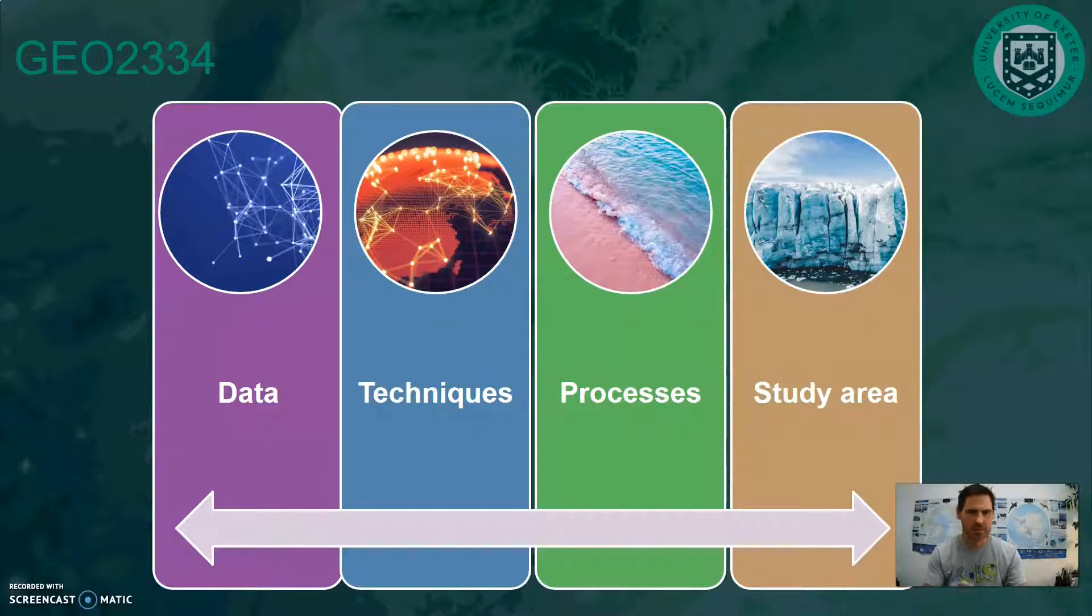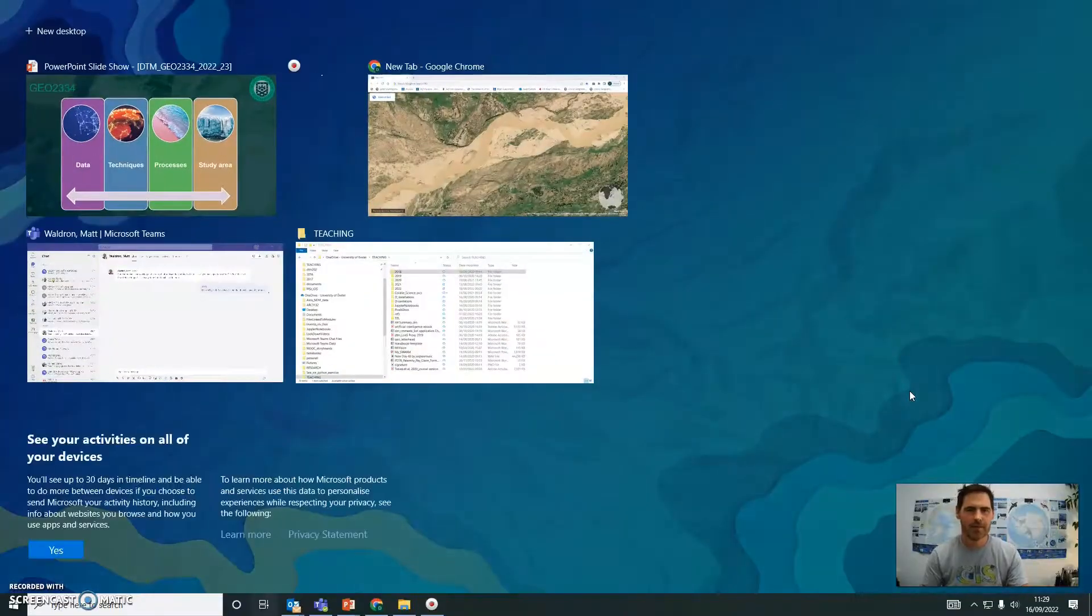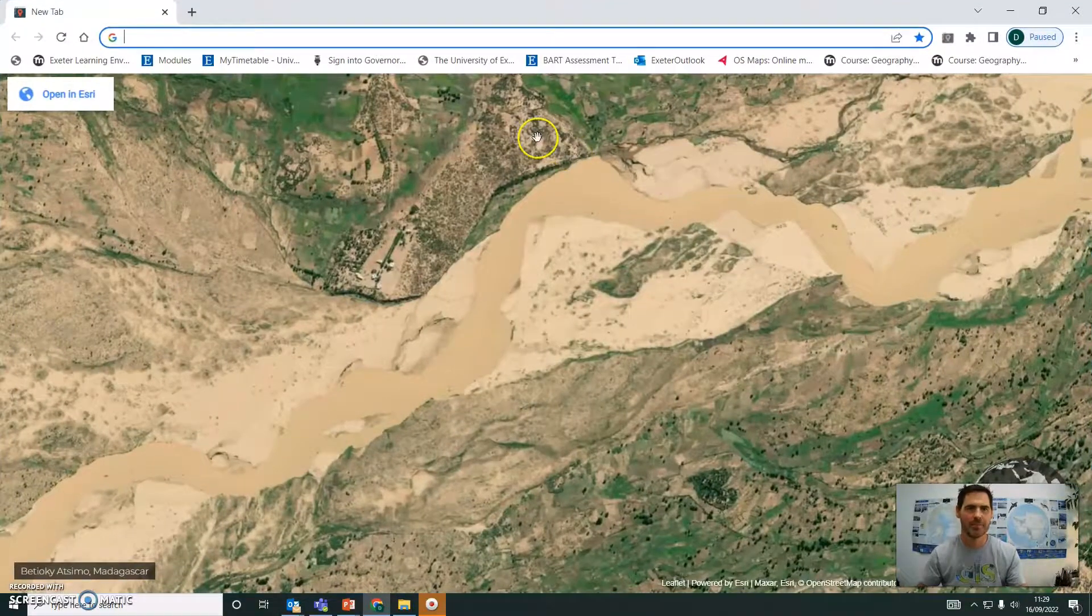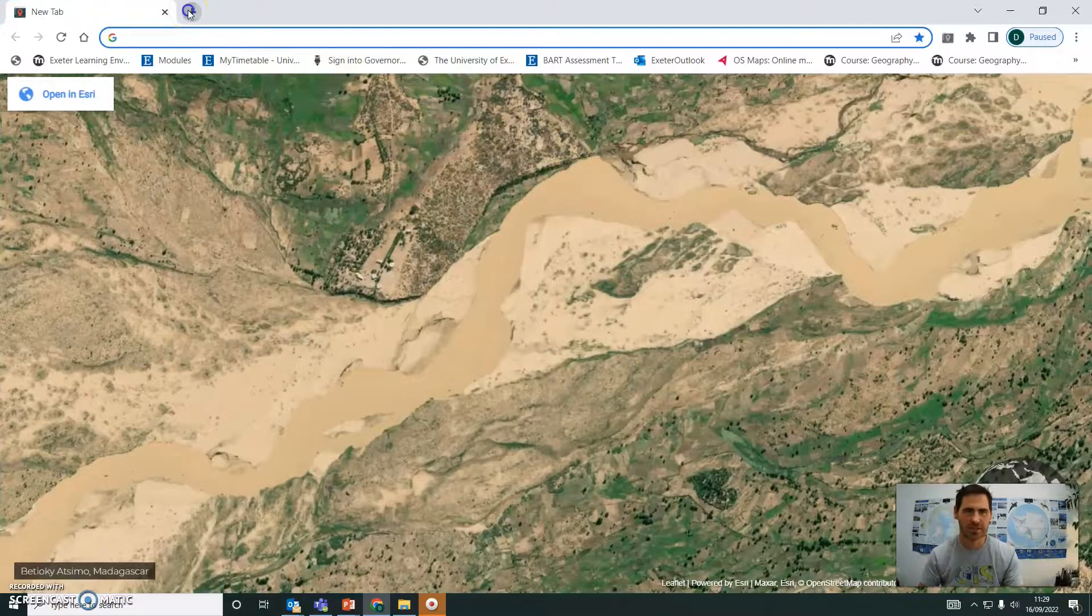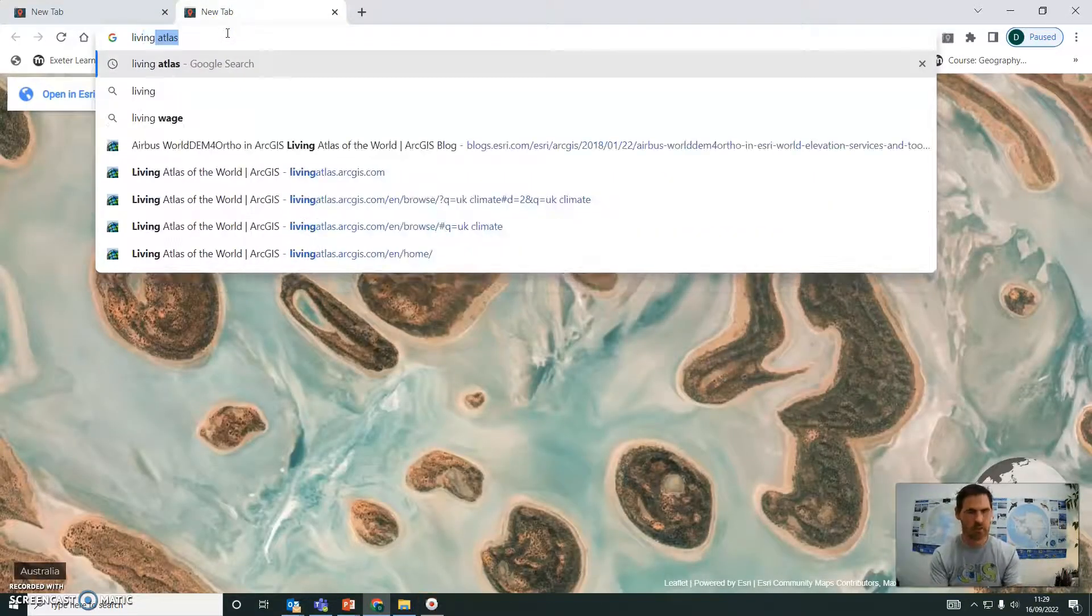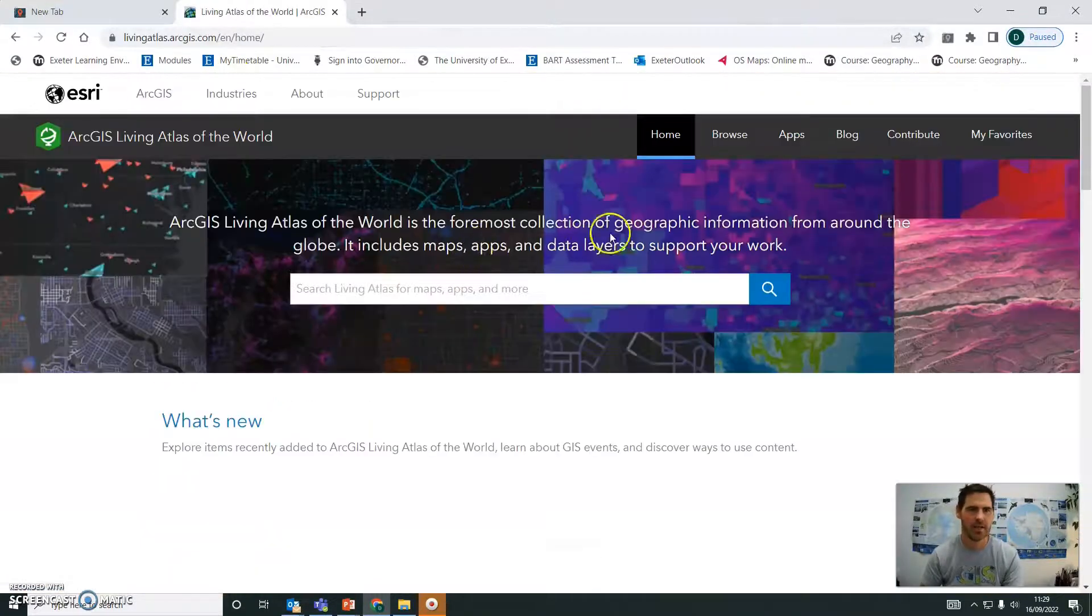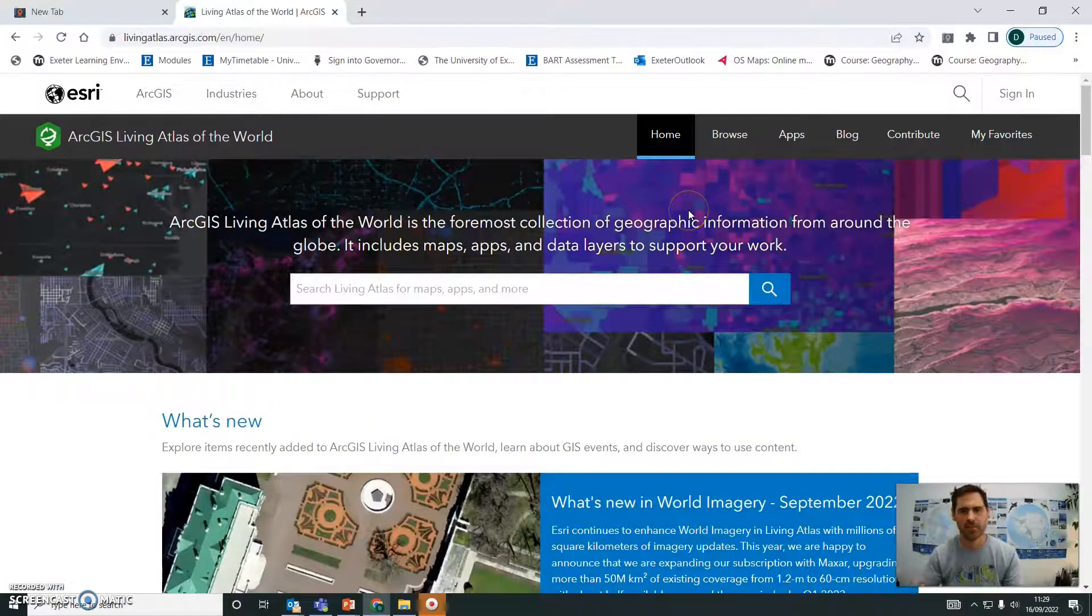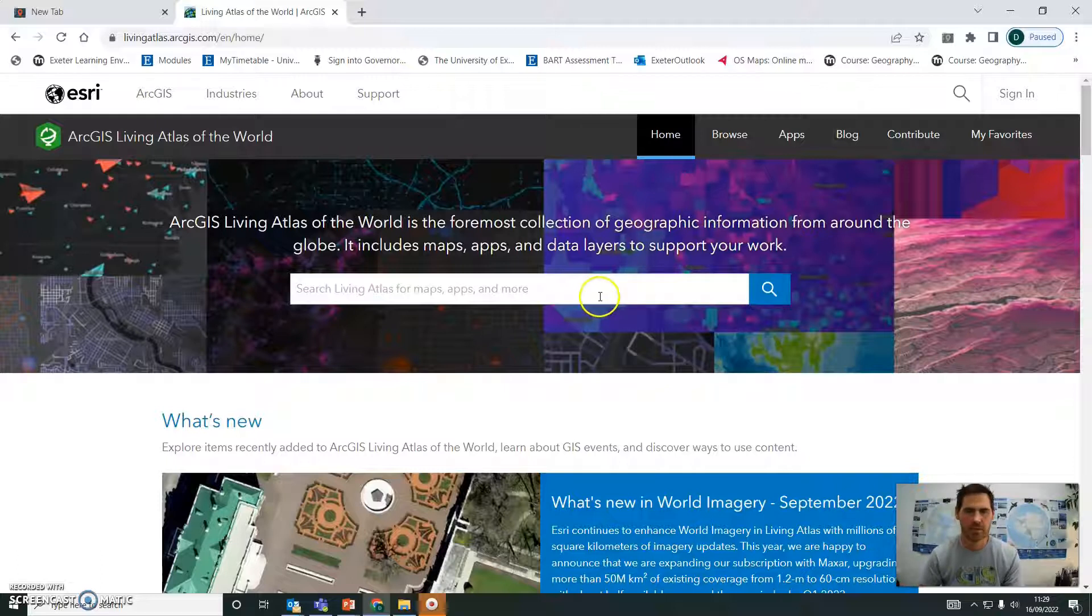Let's explore some of the data that might be available to you to help you and get some ideas. And I'm going to start by not looking at a glaciology application, but going to the Living Atlas, which is an Esri archive of all sorts of different spatial data.